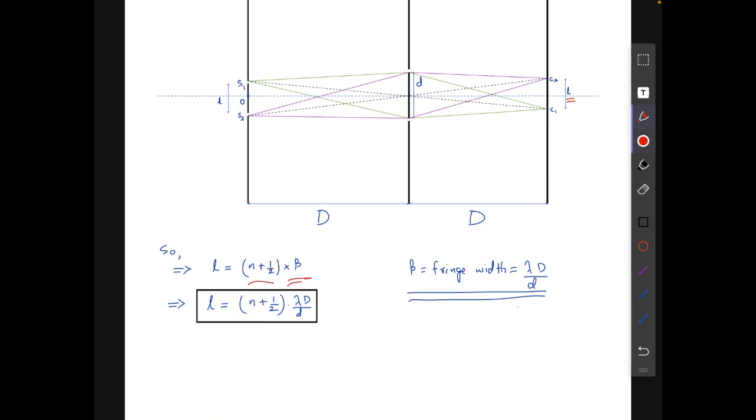It is generally given by lambda D over d, where D is the distance between the slits and the screen and small d is the distance between the slits. From here we can clearly see that the value of l should be (n + 1/2) times lambda D over d, where n is some integer. That's the final answer. Thank you.